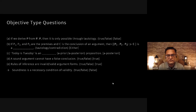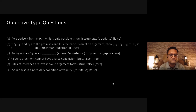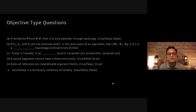The first question: if we derive p from p·p, is it only possible through tautology? Many of you might have felt this is a true statement, but it is actually false. From p·p you can derive p using simplification, which is a rule of inference, not tautology. So there is another way — you can derive p from p·p using the rule of simplification. This was a false statement.